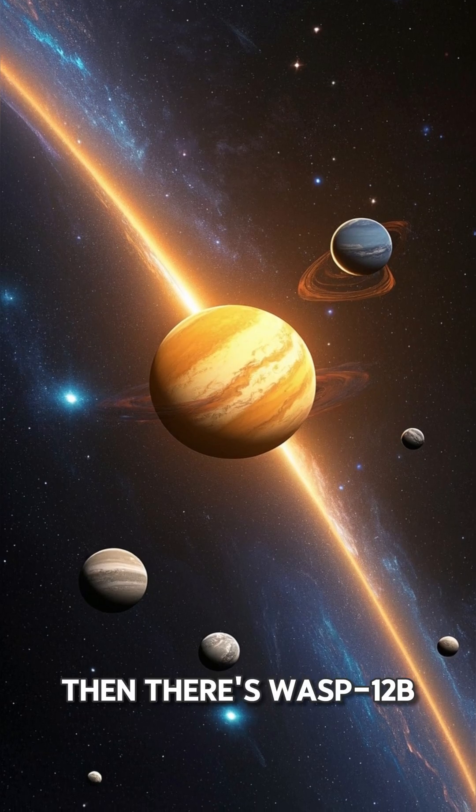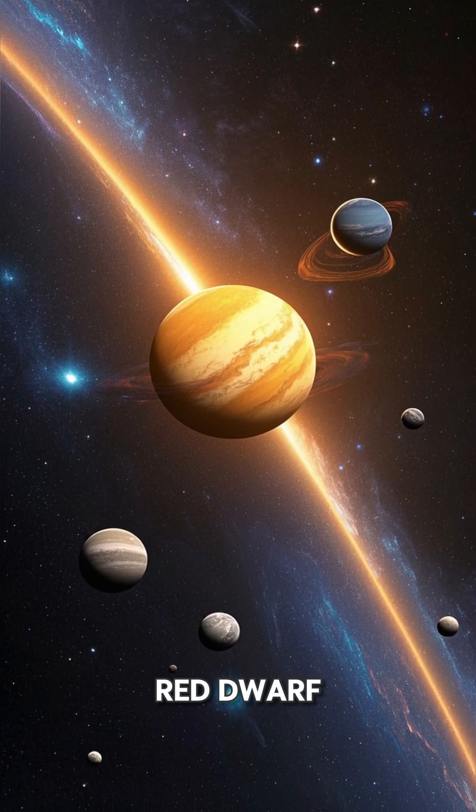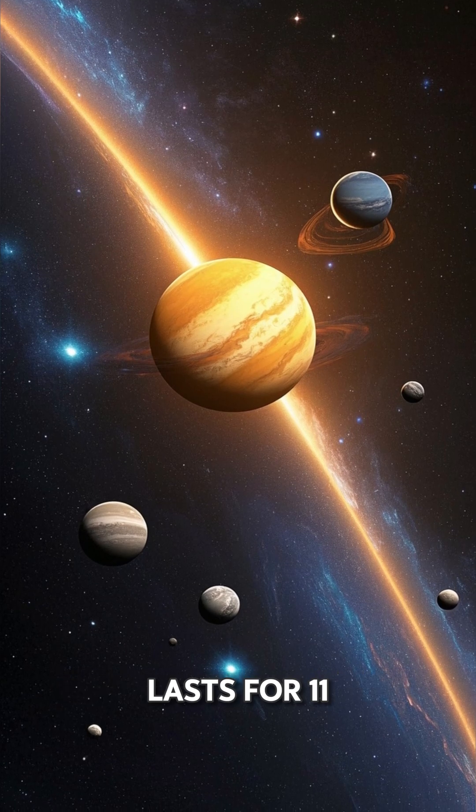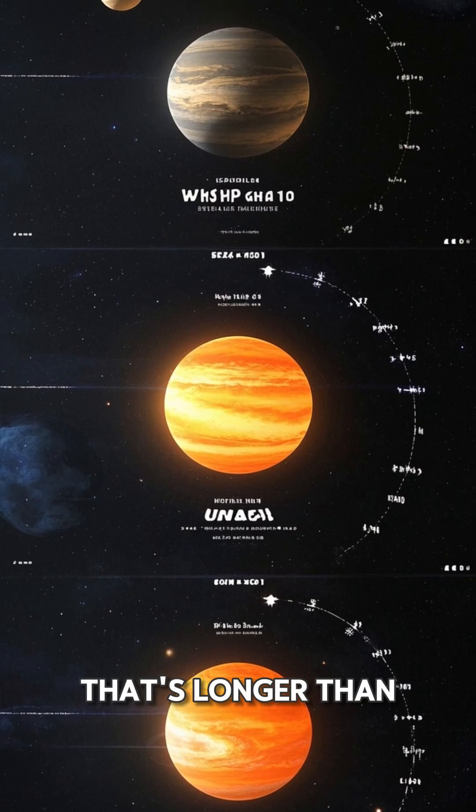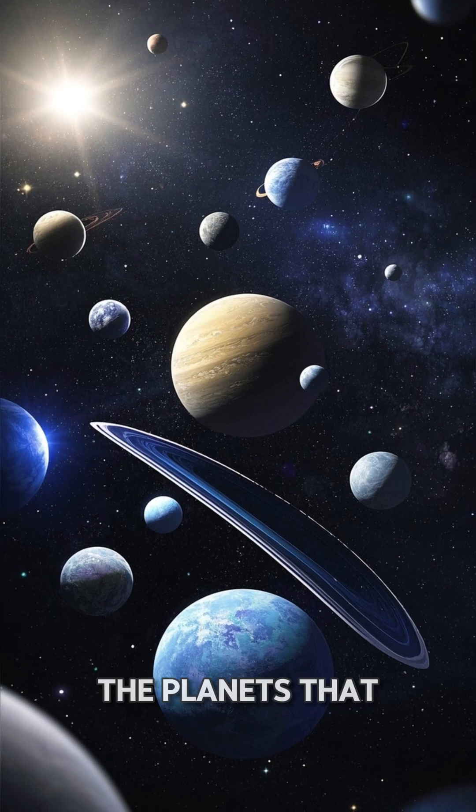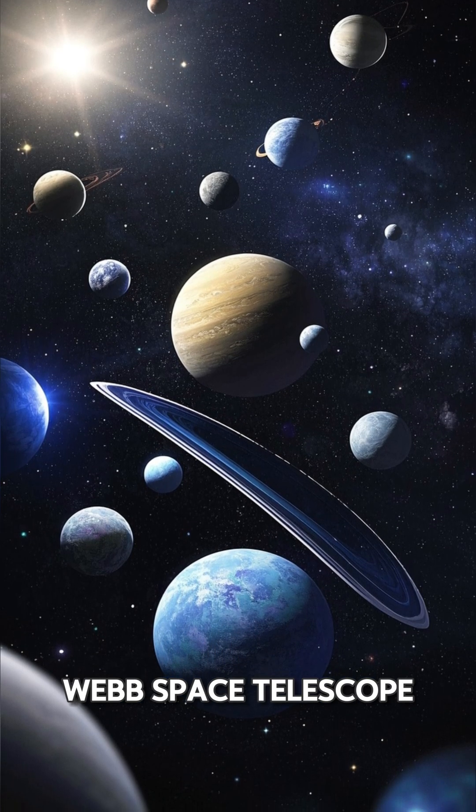Then there's WASP-1-2b, a Neptune-sized planet that orbits a red dwarf 1,100 light-years away. It has a day-night cycle that lasts for 11 days, longer than any planet in our solar system. And these are just two of the planets discovered by the James Webb Space Telescope.